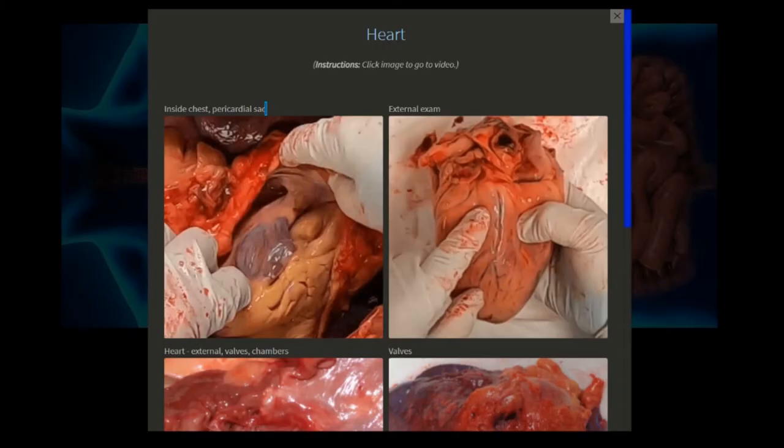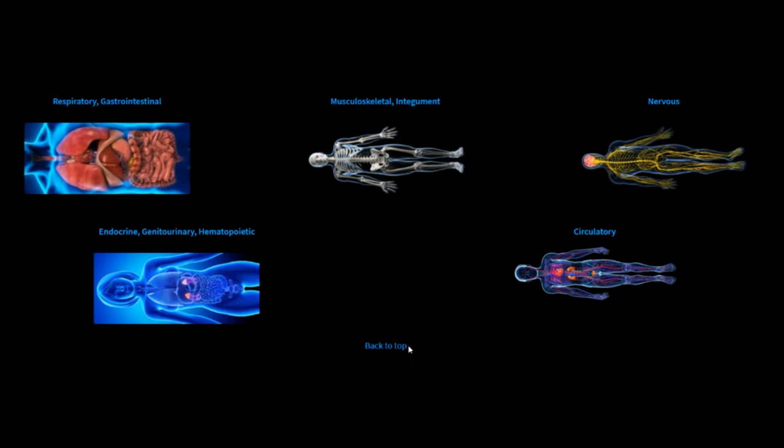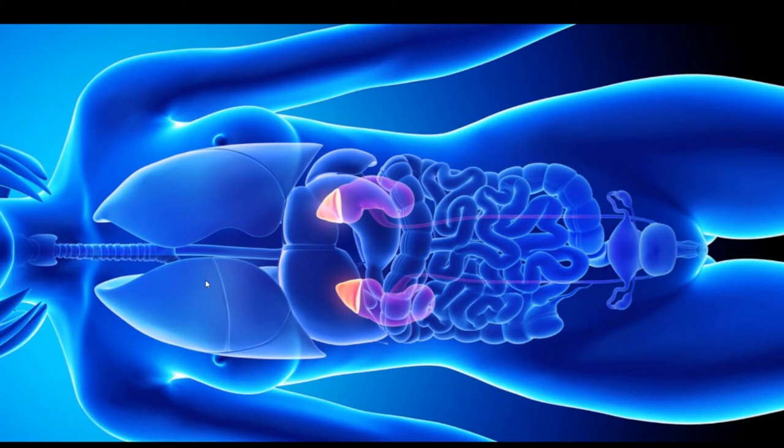When you are done with the selection, close the list on the right. You can go back to anatomy and select another option. For example, this one highlighting endocrine and genitourinary systems.